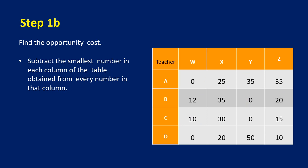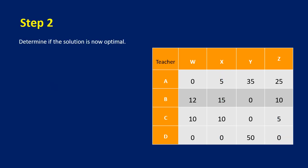Step 1b: we now subtract the smallest number in each column. For the first column the smallest number is already 0, so we do nothing. For the second column the smallest number is 20, so subtracting gives 0, 10, 10, 15, and 5. The third column's smallest is 0, so it remains unchanged. For the last column the smallest is 10, so subtracting gives 5, 10, and 25.